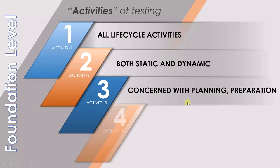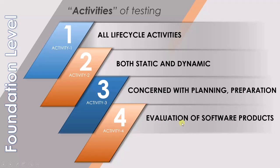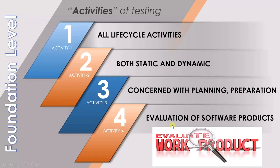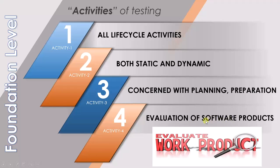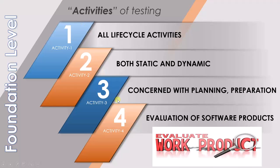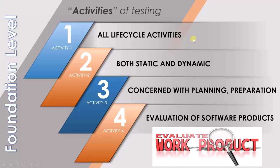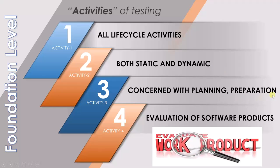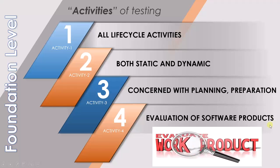The fourth and final point under the activities half of this definition is evaluation of software products. This means that you have to constantly evaluate the work products you get to check if they are working correctly. So these were the four activities under testing: all lifecycle activities, both static and dynamic, concerned with planning and preparation, and evaluation of software products.